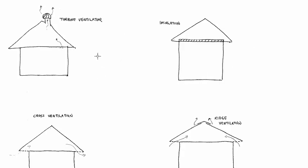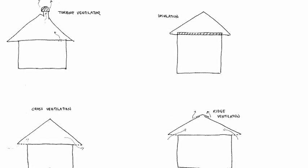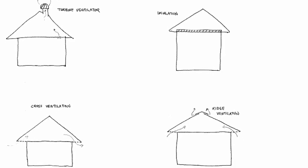Now you have a better idea of what types of ventilation you can use for your home: from the turbine ventilator, installing insulation, cross ventilation, as well as roof ridge ventilation. You can install—there is no necessity to install all four, but you may want to consider installing cross ventilation and insulation, for instance, or installing a turbine ventilator and insulation.